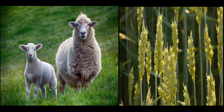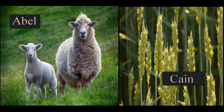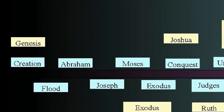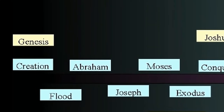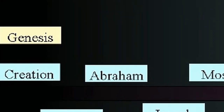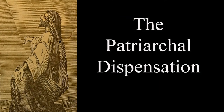Cain and Abel, the first sons of Adam and Eve, are described in Genesis chapter 4. We're told that Abel was a keeper of sheep while Cain was a tiller of the ground in Genesis 4:2. This is the patriarchal period, a time in which God spoke to man through the male head of the family — in this case that would be Adam. While we don't have a complete record of all that God commanded, we can come to some conclusions based on the text.